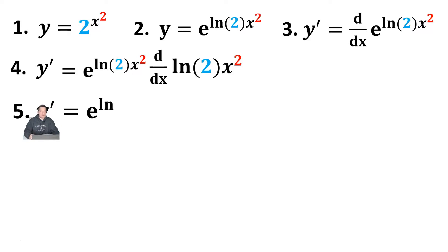y prime will be equal to e to the ln of 2x squared. And then you're going to take that ln of 2 there and place it outside the derivative symbol. So it's going to be ln of 2 on the outside and then the derivative of x squared with the red 2 on the top. From here, you can just differentiate the x squared by itself. That's a simple power rule.